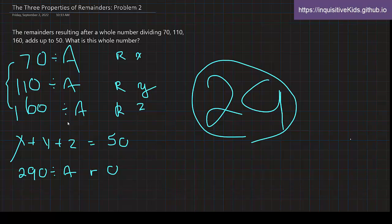And I think the key part of this is, there's really nothing too tough about this. In here we used the first property, which was the sum of remainders is equal to the remainder of sum.